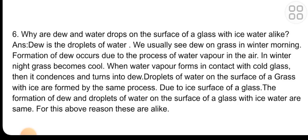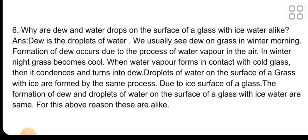Descriptive question six: Why are dew and water drops on the surface of a glass with ice water alike? Answer: Dew is drops of water we usually see on grass on winter mornings. Formation of dew occurs due to the condensation of water vapor in the air. In winter nights, grass becomes cool and water vapor in contact with the cool grass condenses and turns into dew. Droplets of water on the surface of a glass with ice are formed by the same process. Due to the cold surface of the glass, water vapor condenses into droplets. Therefore, the formation of dew and water droplets on a glass with ice are alike.